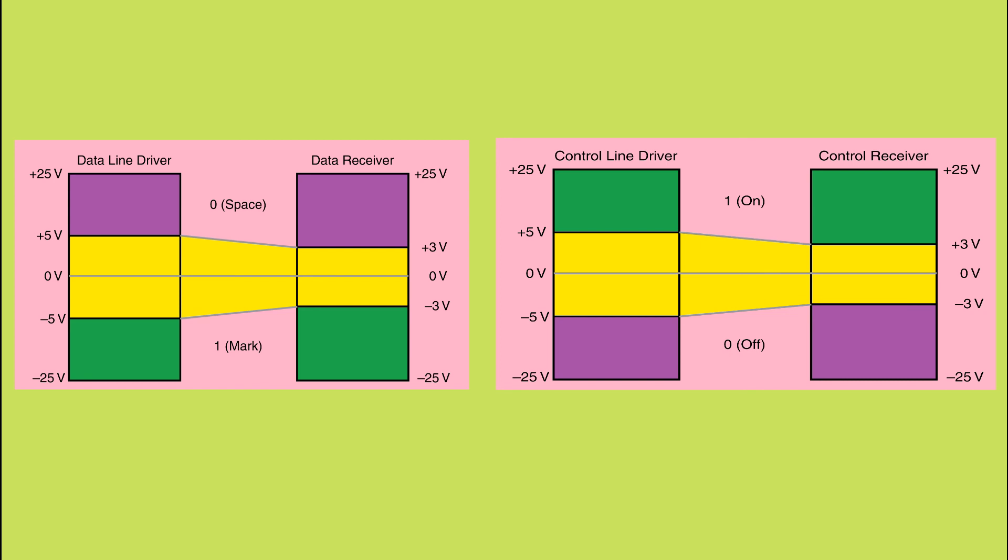Now in this diagram, we can see how the polarity is just opposite in case of data lines and control lines for logic 0 and 1.